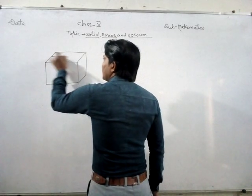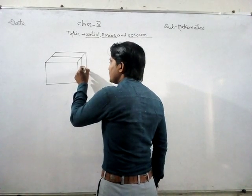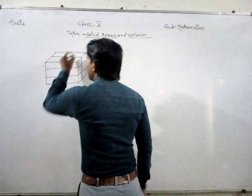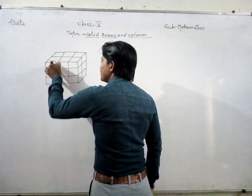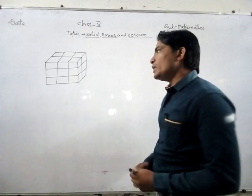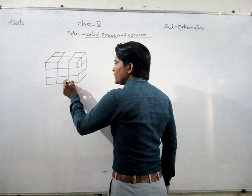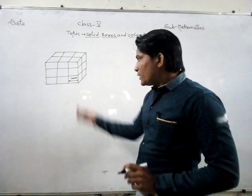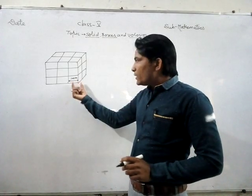Suppose if we divide it into two equal parts here, and here we divide into three equal parts. Suppose one part represents one mm, one centimeter, or one meter. So one cube, one rectangle, one square represents one centimeter.